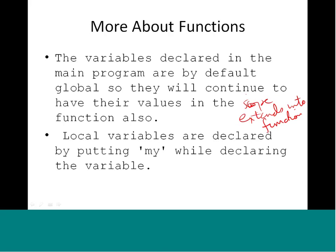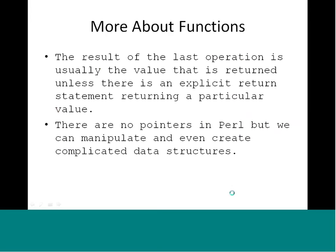Variables declared in the main program are by default global variables, so they continue to hold their values inside the function as well — the scope of the variable extends into the function. If there are local variables, they are declared using `my` at the beginning of the declaration. Variables declared with `my` inside a function have scope only within that function and do not go outside. We also saw return values: the result of the last operation is returned unless there is an explicit `return` statement specifying what to return. Note there are no pointers in Perl, but we can still manipulate and create complicated data structures.